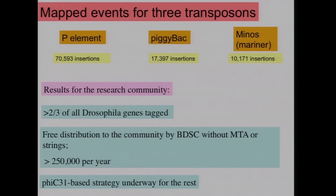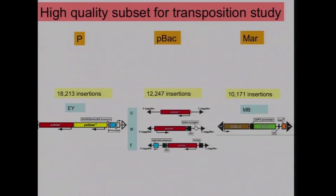We did this with three different types of DNA elements. The net result for the community is that two-thirds of all genes have an insertion very close by that provides access, if not a direct mutation. These have been very widely used. Our current strategy uses PhiC31 sites in these insertions, which allow you to swap in DNA at the site of insertion, enabling access to the remaining genes basically by homologous recombination.